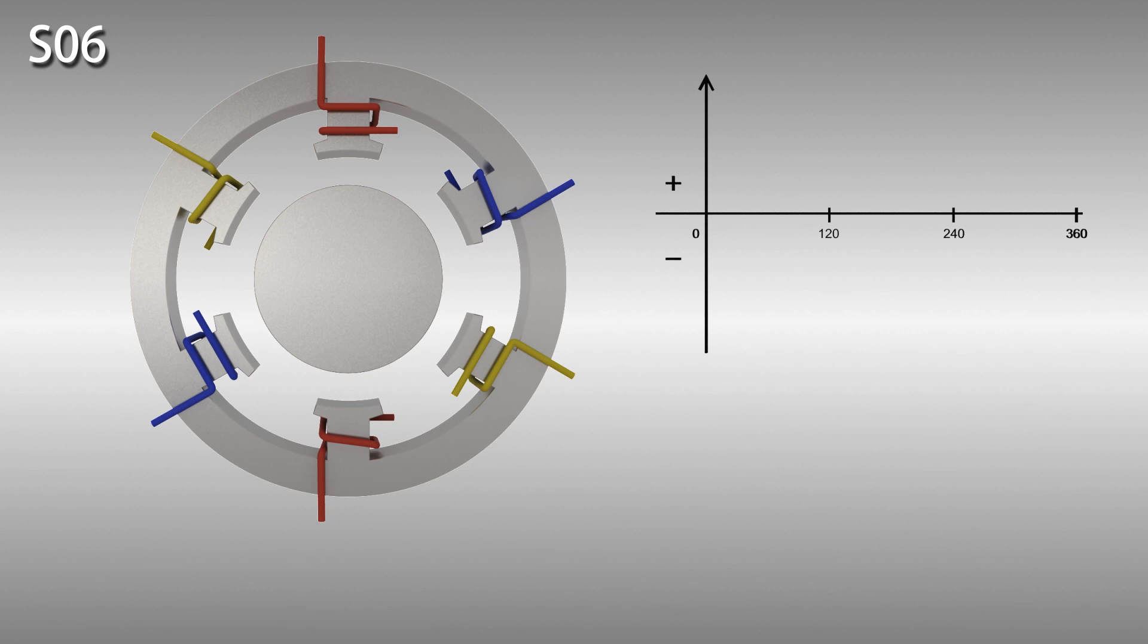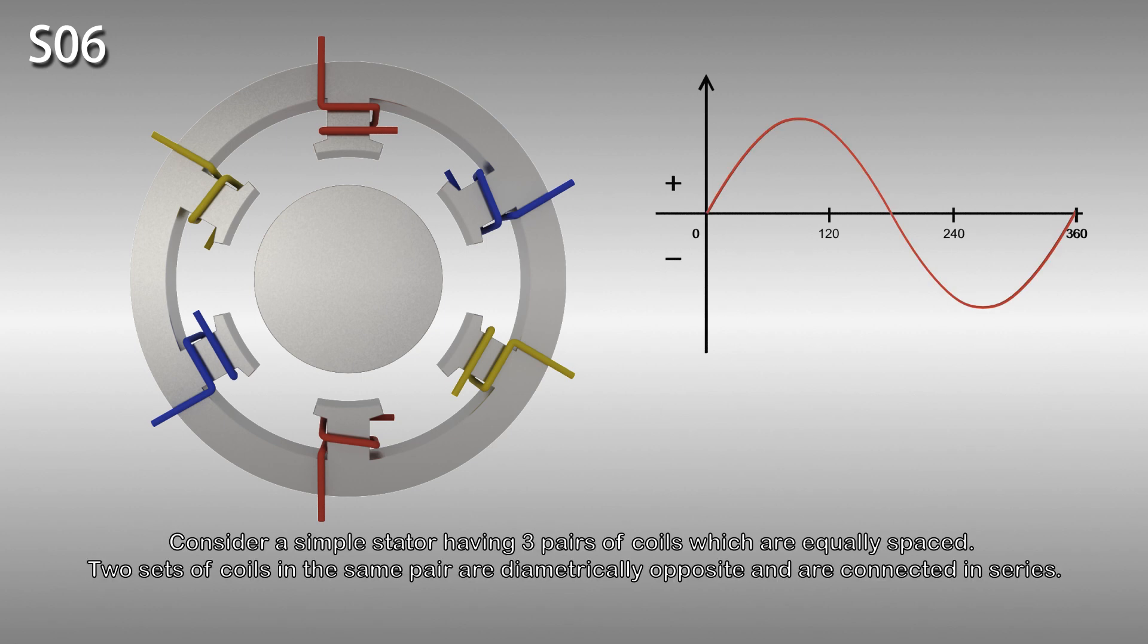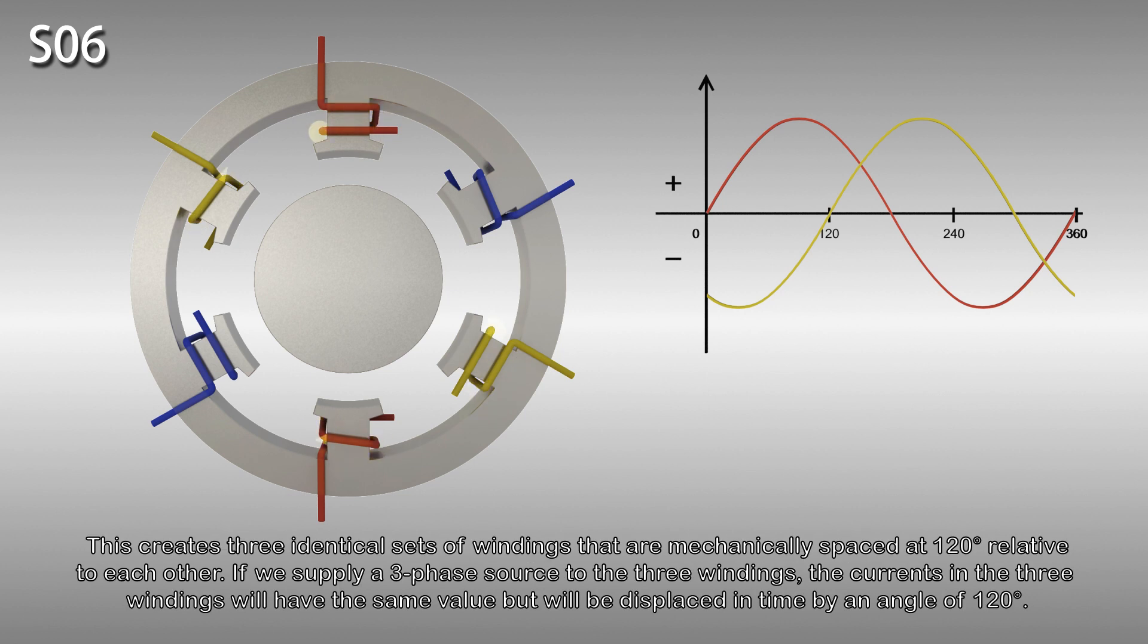The animation now explains the rotating stator magnetic field. Consider a simple stator having three pairs of coils which are equally spaced. Two sets of coils in the same pair are diametrically opposite and are connected in series. This creates three identical sets of windings that are mechanically spaced at 120 degrees relative to each other. If we supply a three-phase source to the three windings, the currents in the three windings will have the same value but will be displaced in time by an angle of 120 degrees.